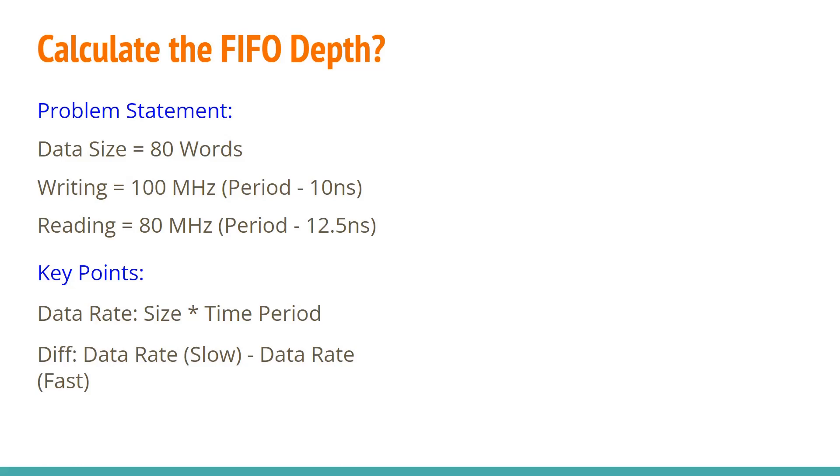Then the difference. The difference is the data rate, slow data rate minus the fast data rate. That will give us the key difference that we need to figure out what kind of buffering or what is the FIFO depth that we need in order to not lose any data while the transmitter is sending and the receiver is able to receive the data at a slower pace.